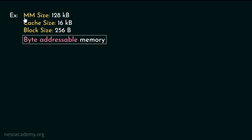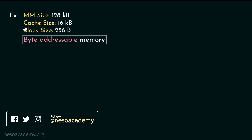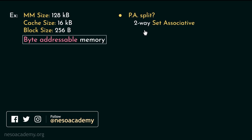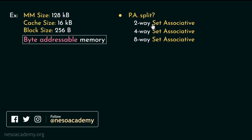Consider this example: the main memory size is given as 128 kilobytes, cache size is mentioned as 16 kilobytes, the block size is 256 bytes, and it's a byte addressable memory. Now they are asking us about the physical address split for 2-way, 4-way and 8-way set associative caches. So let's observe the entire physical address split for all these organizations.